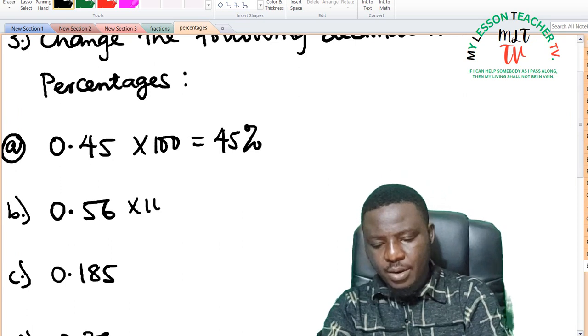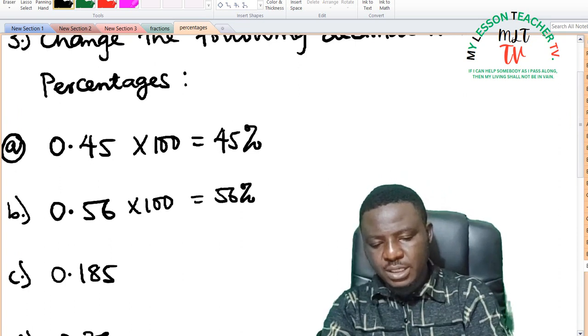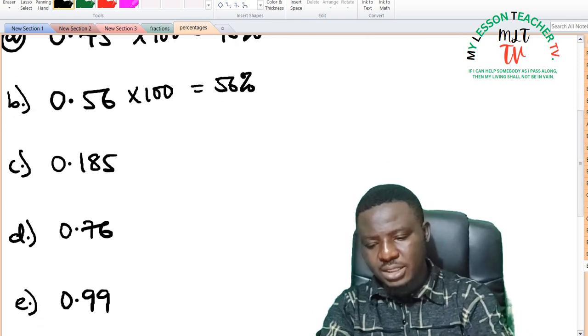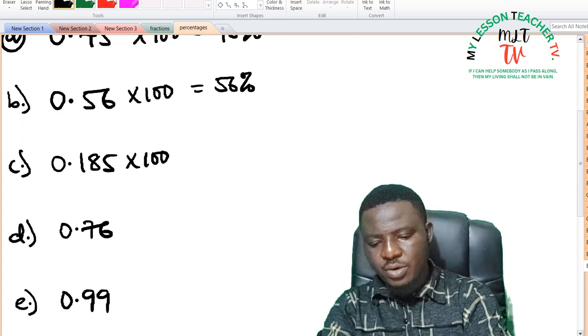You multiply by 100, this gives you 56%. Because you move the decimal point twice, when you multiply by 100, this is 18.5%.